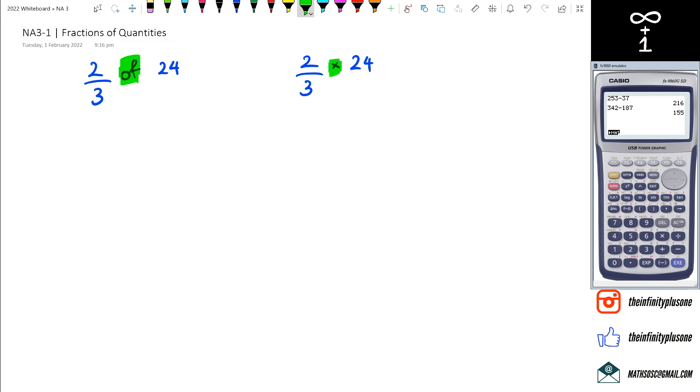There's so many ways of doing this. Method one: two-thirds of 24. What you can actually do is take the two numbers in the numerator - 2 and 24 - multiply both of those numbers, and you get 48. Two times 24 is 48. Then do 48 divided by 3.